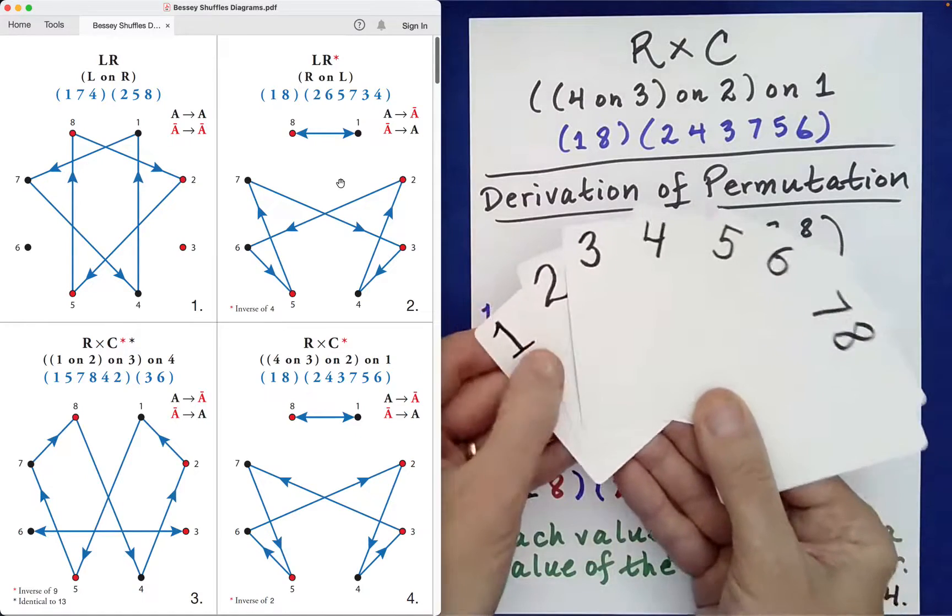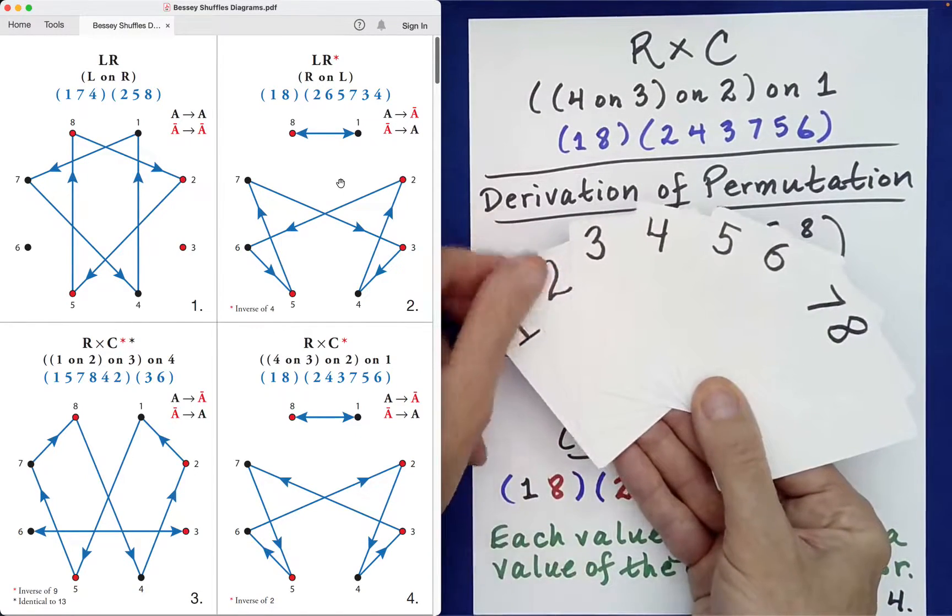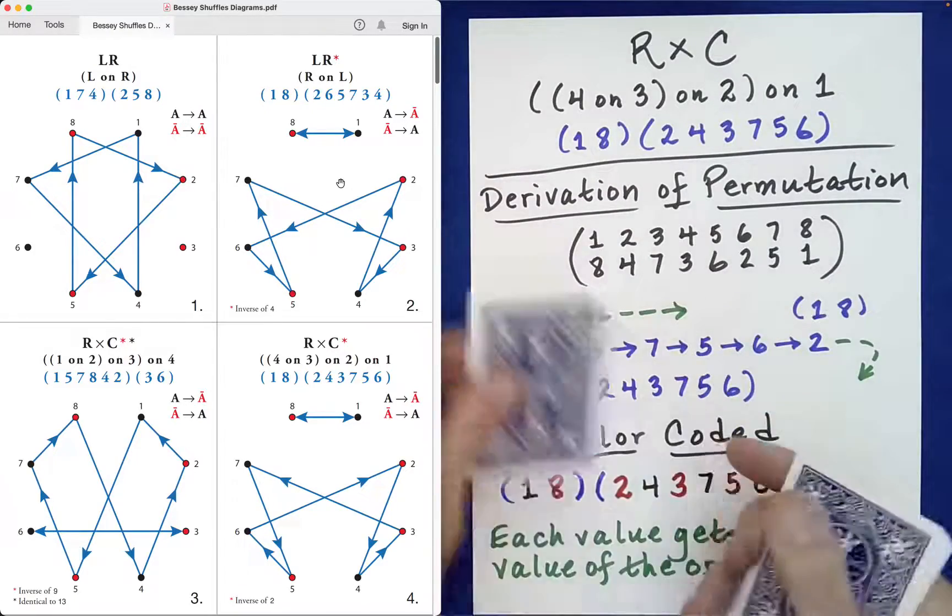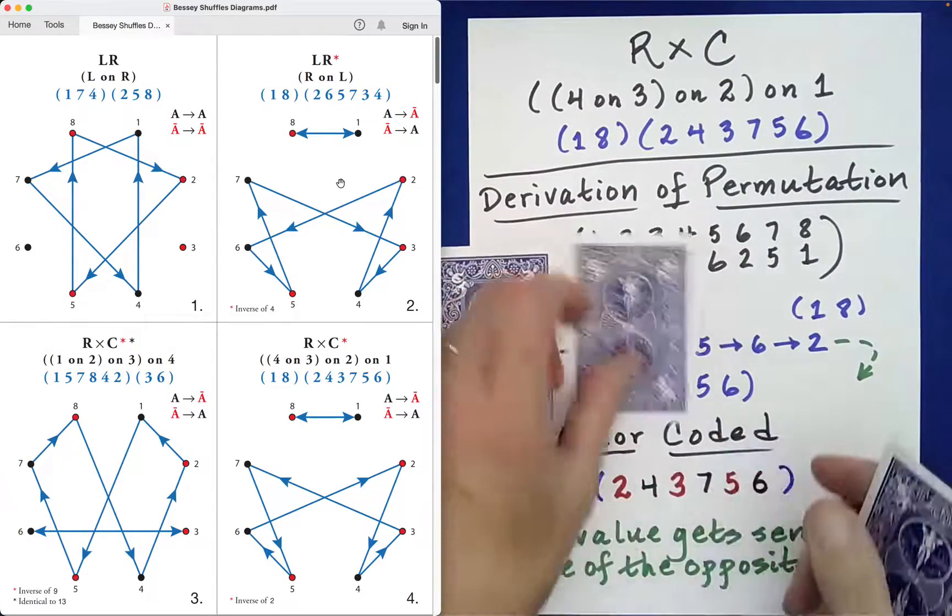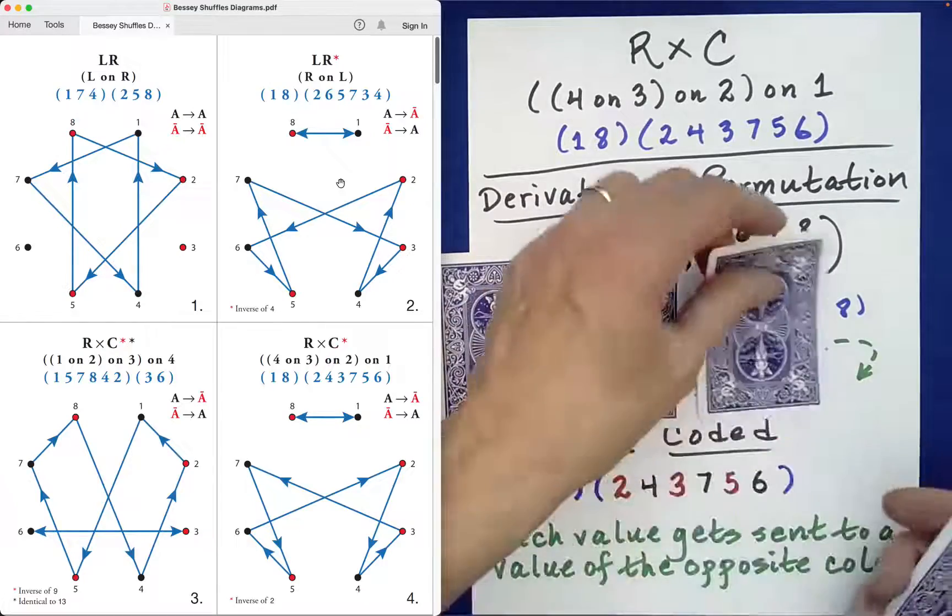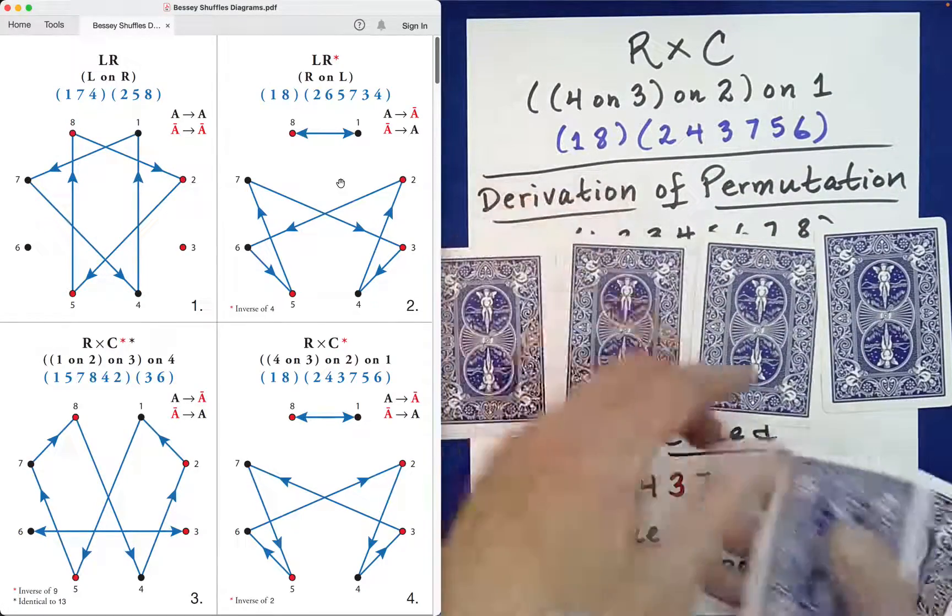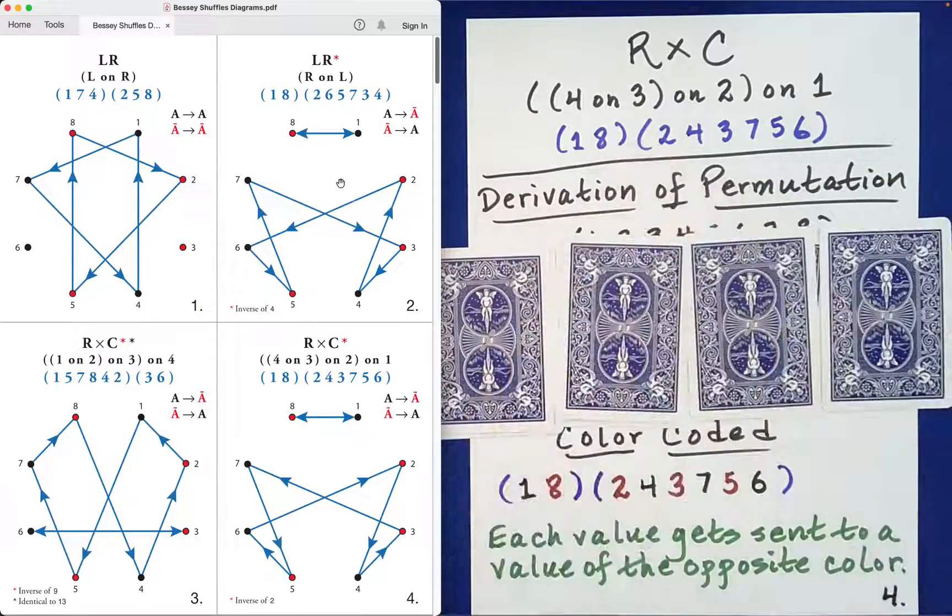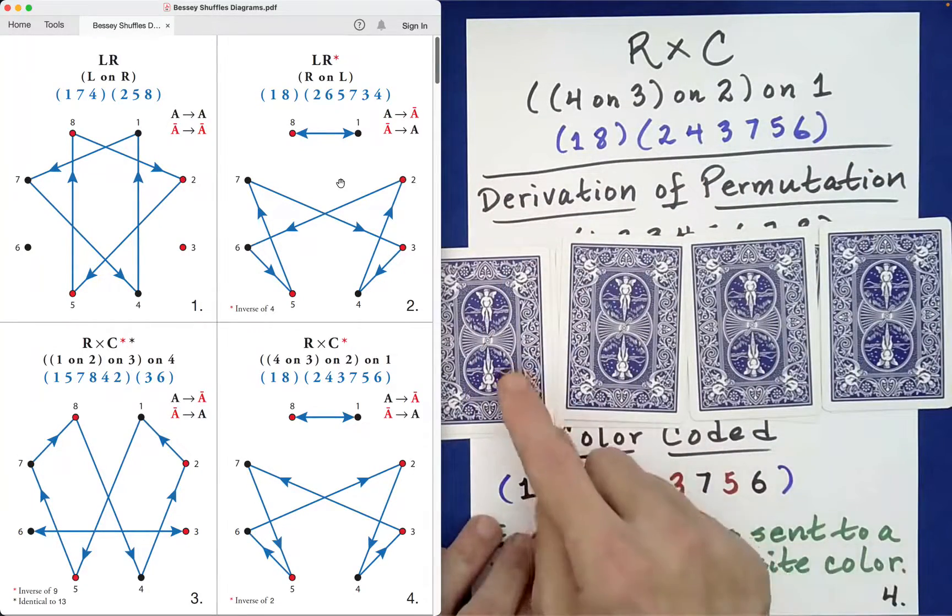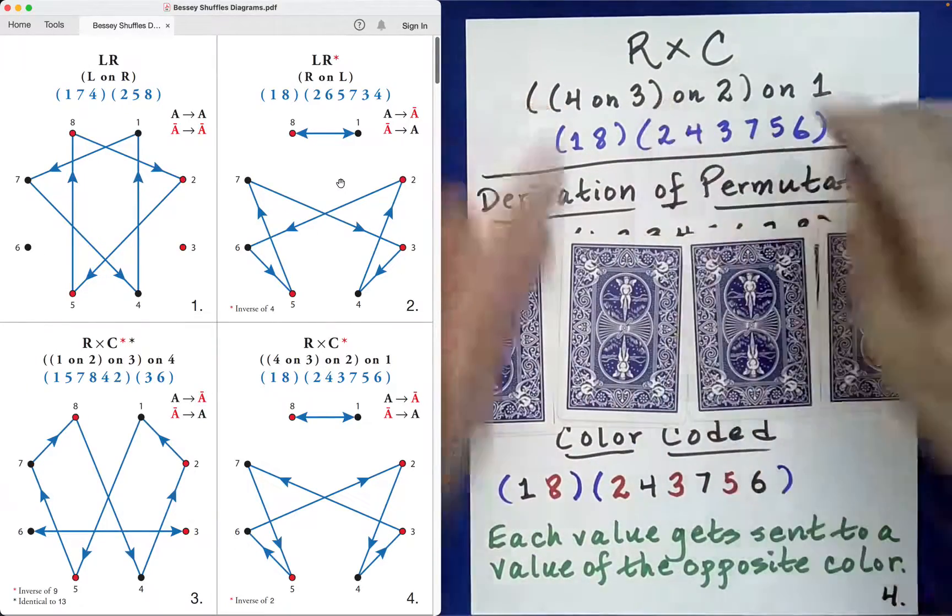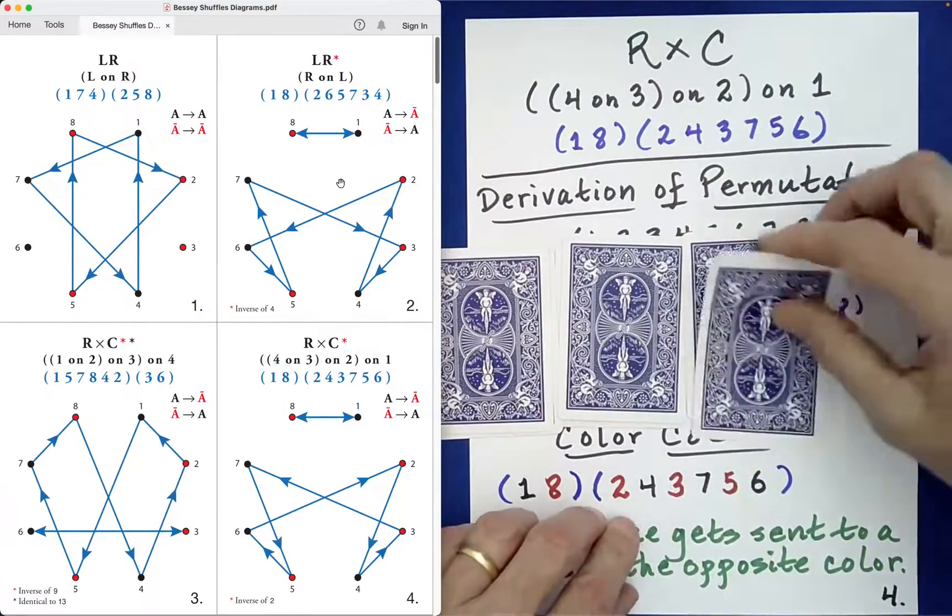So if we begin with our ordered packet one through eight as we've been doing, and then we go ahead and perform this shuffle, let's go ahead and do it. Involves four piles, right, four piles left right, very good. Now in stacking, instead of stacking left to right...